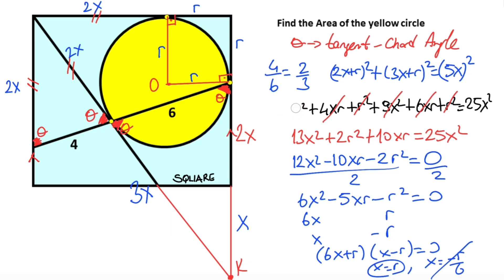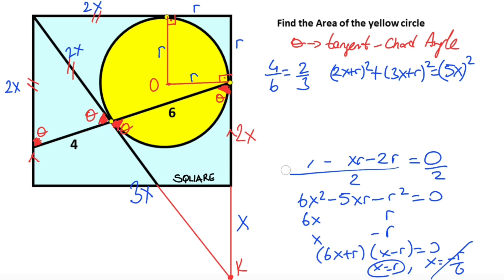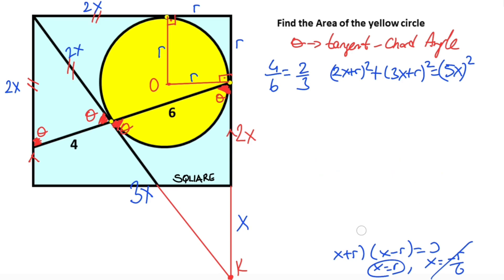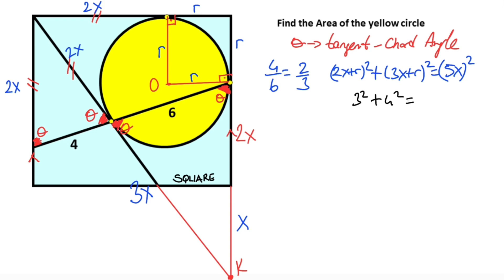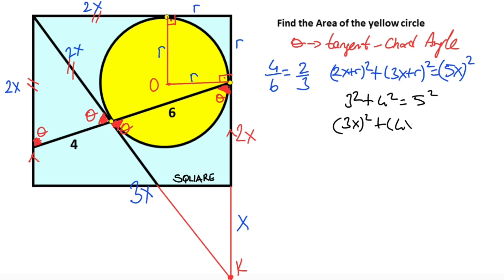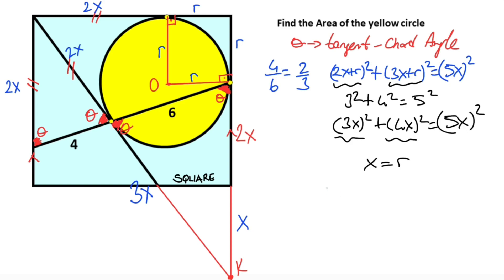Or you can think of it like this: we know that three squared plus four squared equals five squared. That means three x whole squared plus four x whole squared must equal five x whole squared. If you notice that, x must be equal to r.